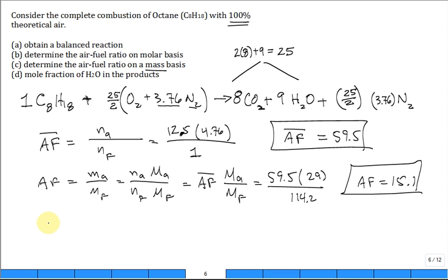And then mole fraction of water in the products. So Y of H2O is going to be 9 divided by 8 plus 9 plus 12.5 times 3.76. Did I do that right? And that becomes 0.1406, 14%.